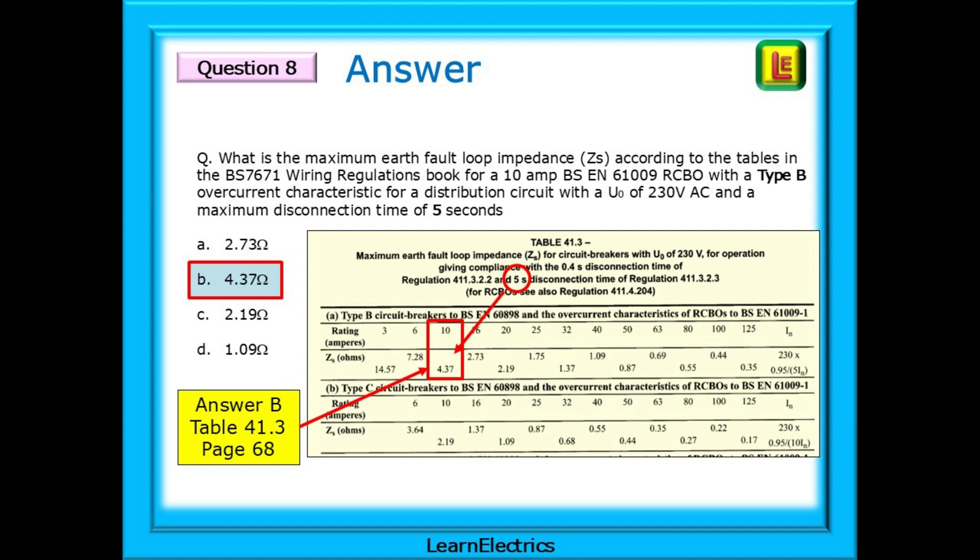The answer choice is B, 4.37 ohms. This is found in table 41.3 on page 68.